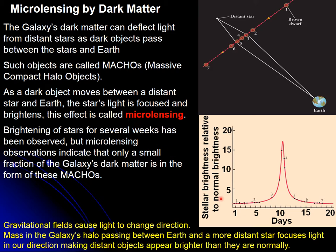This microlensing produces this effect. This is the brightness of a star, and this brightness will vary as a function of time as this object passes between the star and us. We can see that it would have the normal brightness under normal circumstances, but then all of a sudden the intensity would increase. Because we begin to get, in addition to the direct light, we begin to get light that is being deflected by the MACHO. So we have an increase of brightness. However, it turns out that this cannot solve the problem of dark matter. Only a small fraction of the dark matter of the galaxy is in the form of MACHOs.